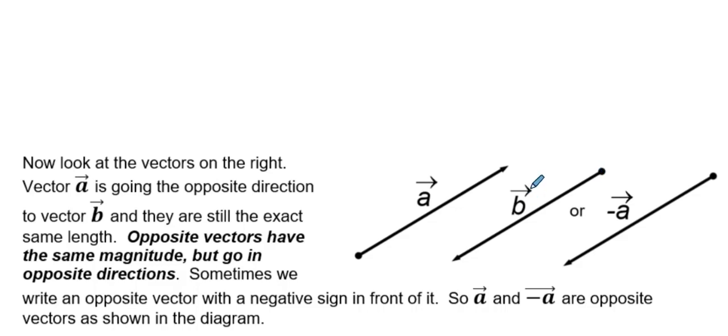And by the way, vector b, you could also call it, because of notation with vectors, you could also call it negative vector a.